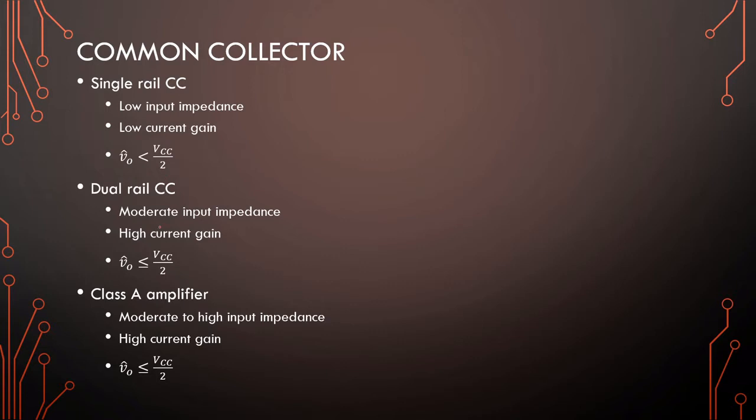Dual rail has moderate input impedance, high current gain, and we can actually reach the rails for peak output voltage. Class A has moderate to high input impedance, high current gain, and we can reach the positive rail and ground. We're not counting the negative rail because it's busy with bias and bias stabilization.